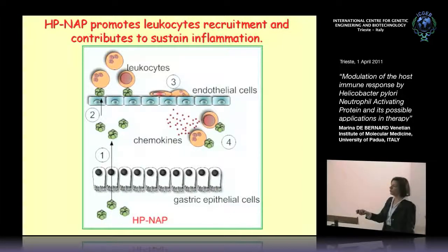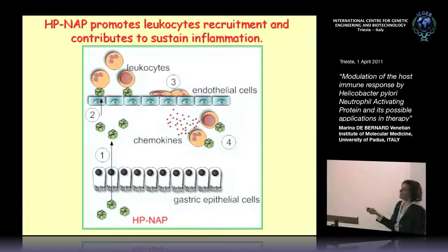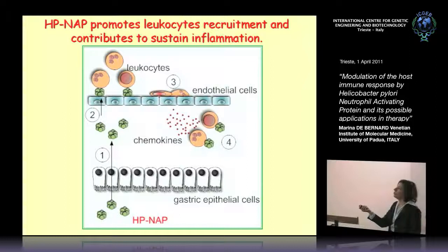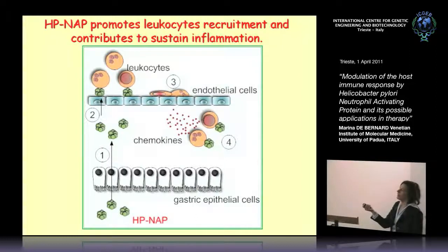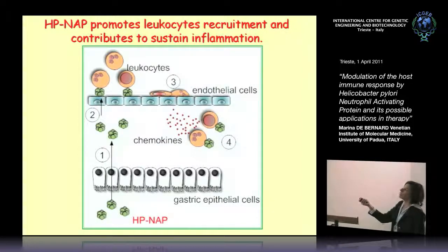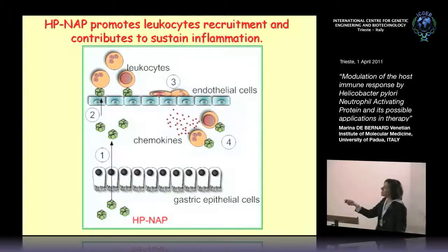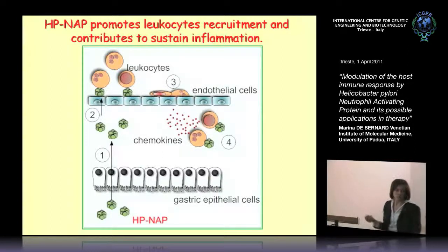To summarize this first part: H. pNAP is released in the gastric lumen, then it is transported through the gastric epithelial cells. Once in the tissue, it can be transcytosed through the endothelial monolayer, and once on the luminal side of the endothelium, it activates leukocytes by promoting an increase of affinity of integrins, responsible for adhesion before extravasation. H. pNAP can also stimulate these cells to release chemokines, which continue the recruitment of cells from the blood.